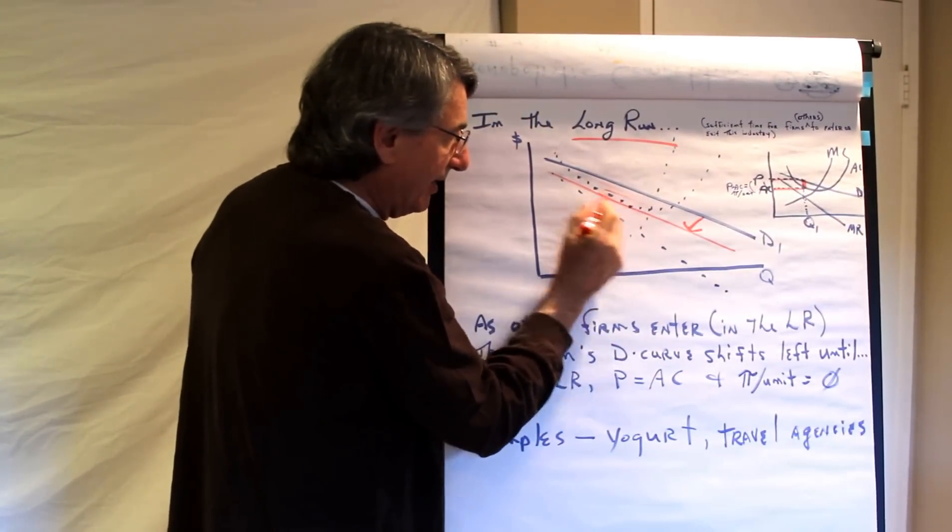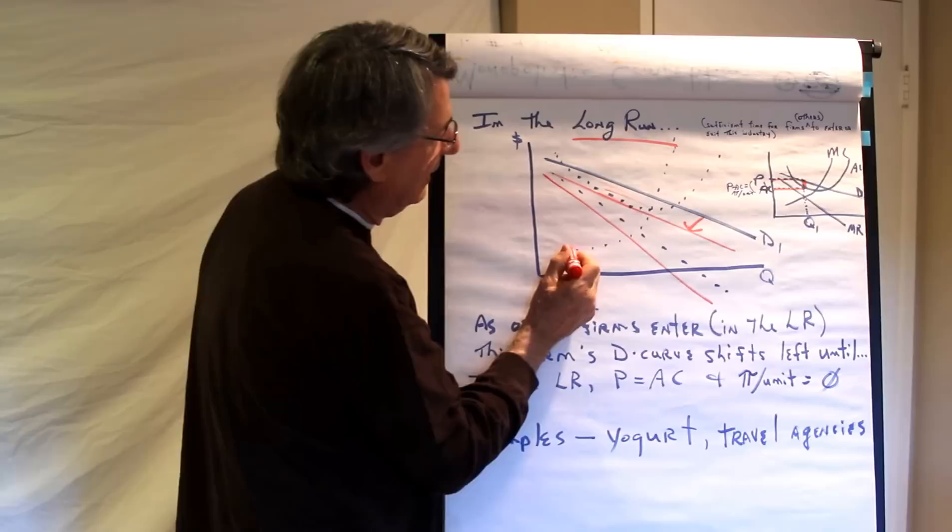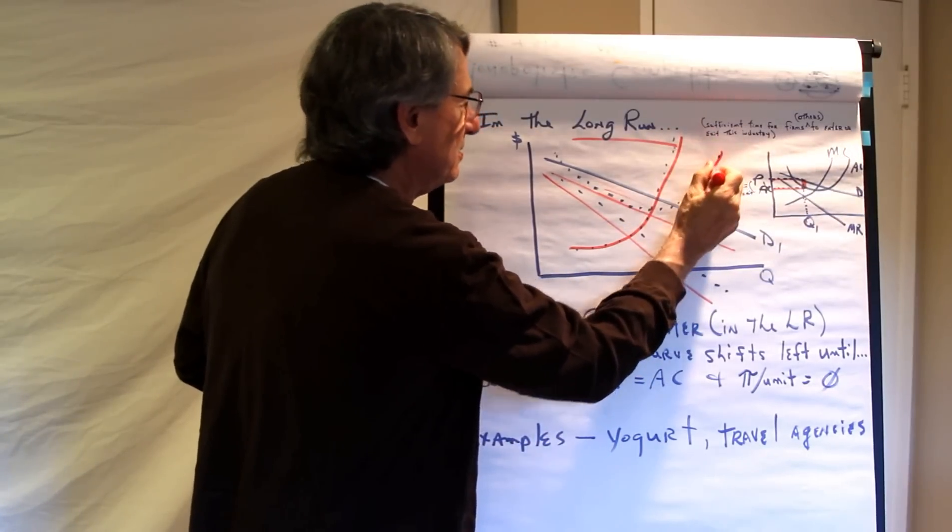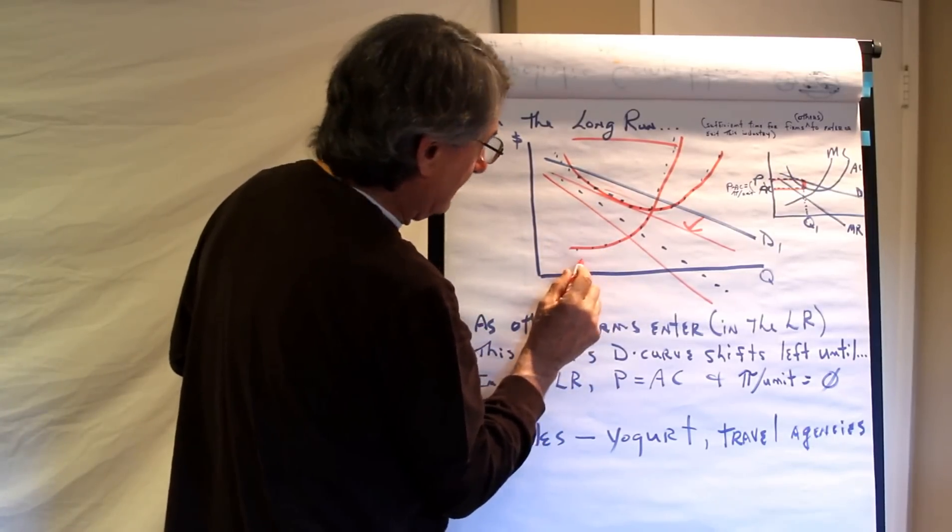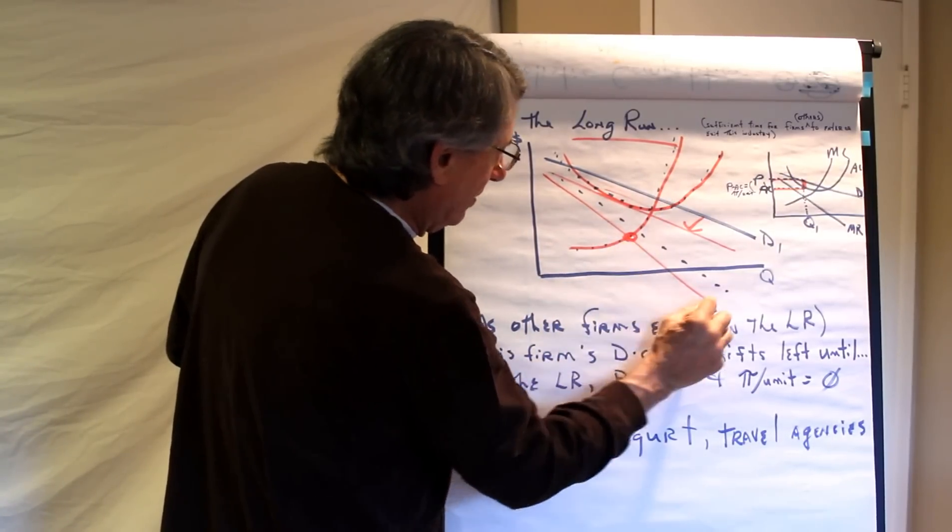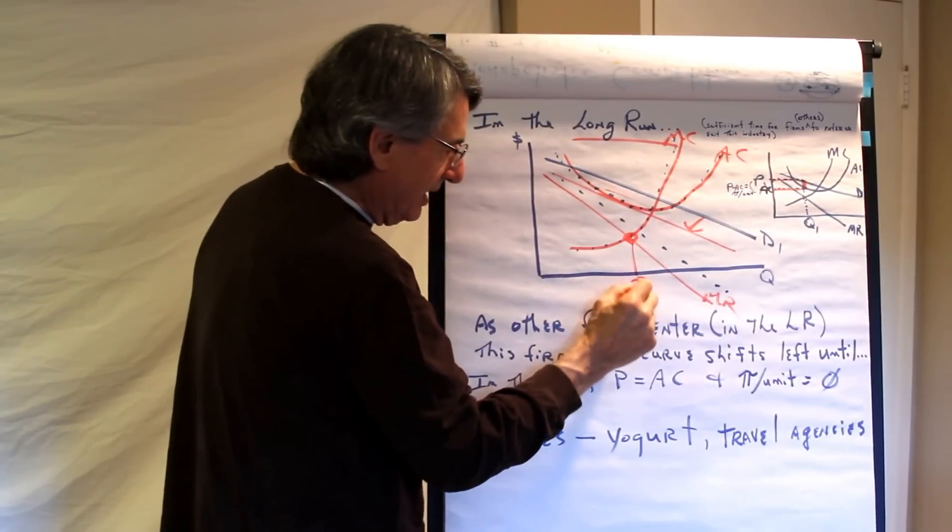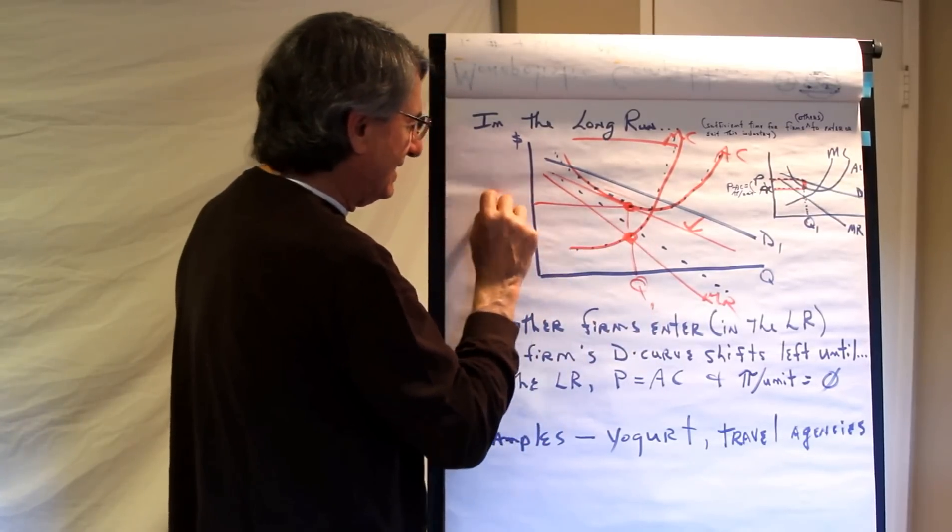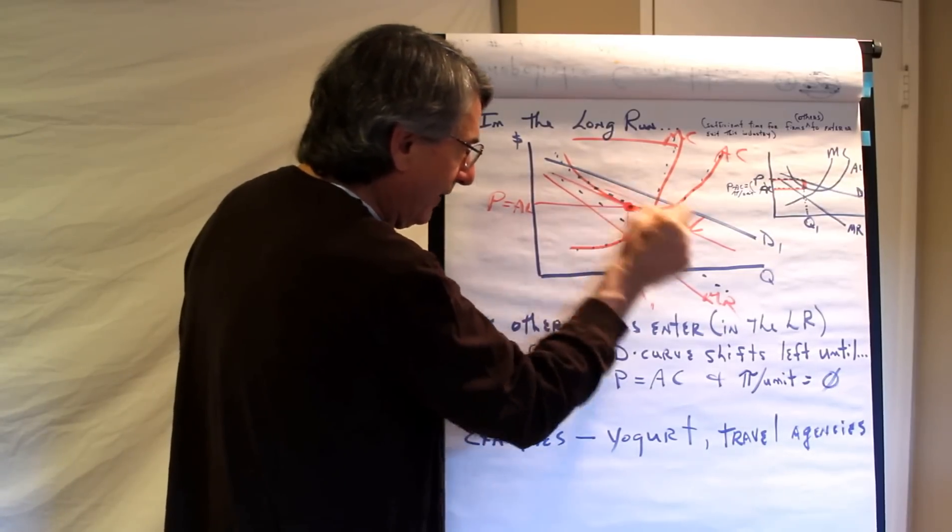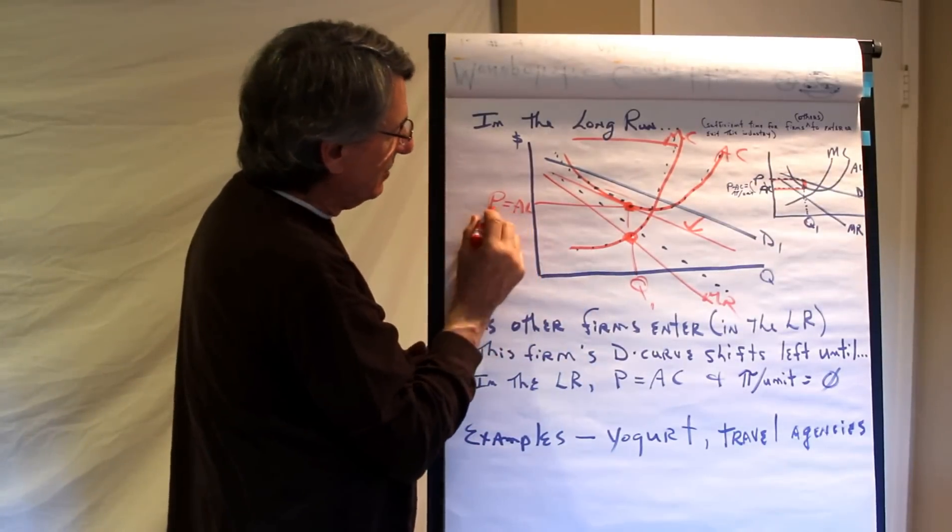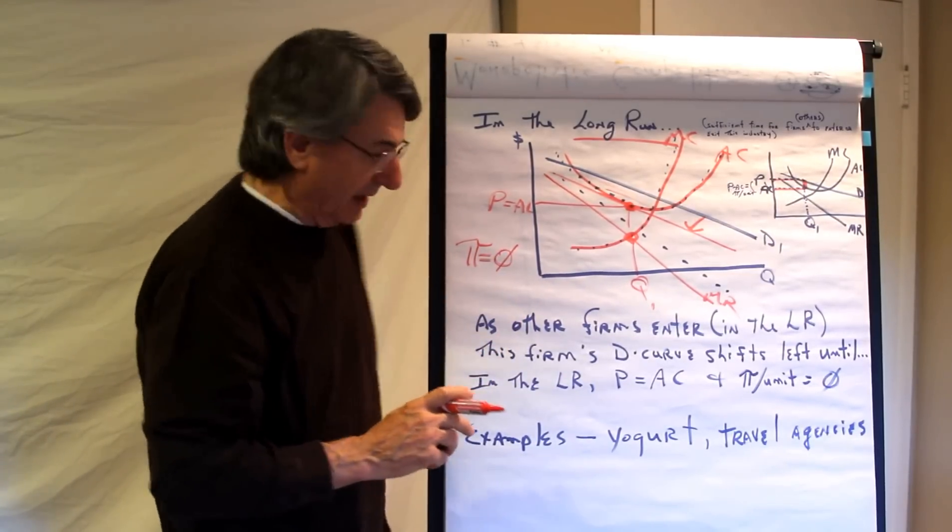And so their demand curves float inward like that. And as more and more firms enter, it just keeps floating left and left. And with it, the marginal revenue curve floats to the left. I assume their costs don't change. So that's the average cost. And what ends up happening is that this is marginal cost. So where marginal revenue equals marginal cost, that's average cost, then that's the quantity they'll produce. But look, all of a sudden that's the price, but it's also the same as average cost. Do you see that that point is both on the demand curve and it's the average cost.